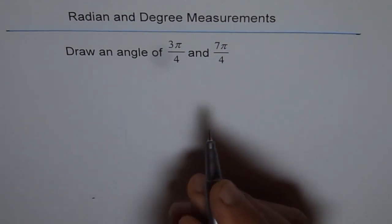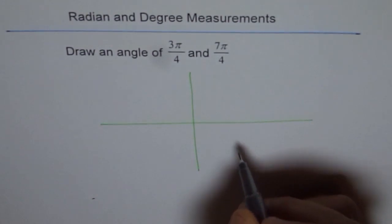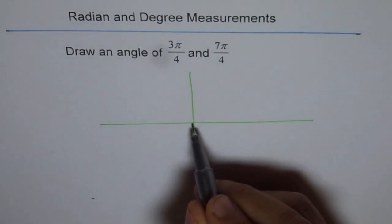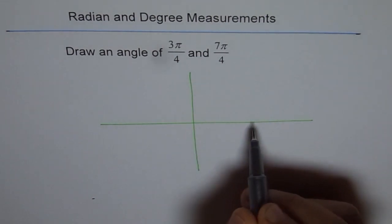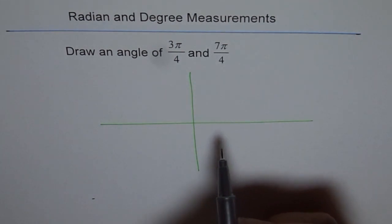To draw an angle, we actually mean angle in standard position. That means we have a coordinate system and our vertex is at origin, initial arm is along the x-axis. That's what we mean when we draw an angle. We are trying to draw an angle in standard position on our coordinate plane.